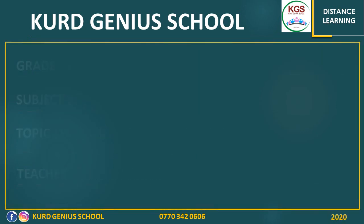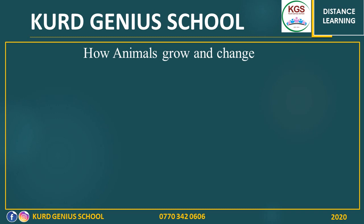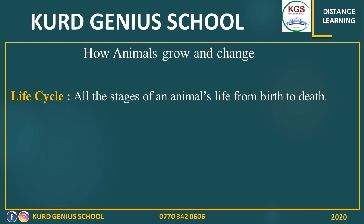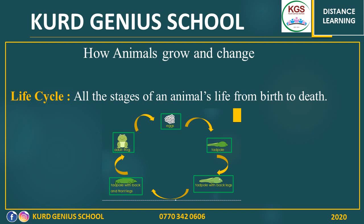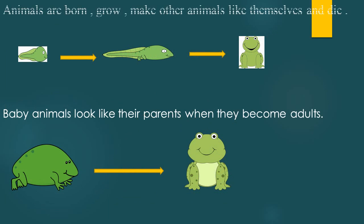Let's get started. How animals grow and change. First of all, let's know what does life cycle mean. Life cycle is all the stages of an animal's life from birth to death. If you look at this picture, we have all the stages of the frog's life cycle.